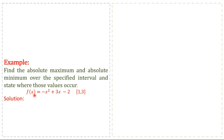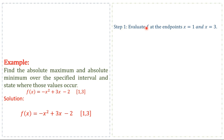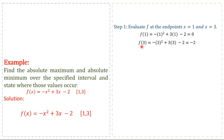This is our given function and we have to find the absolute maximum and minimum over this closed interval. Step 1: Evaluate f at the endpoints x = 1 and x = 3. The value of the function at x = 1 is 0, and the value of the function at x = 3 is -2.